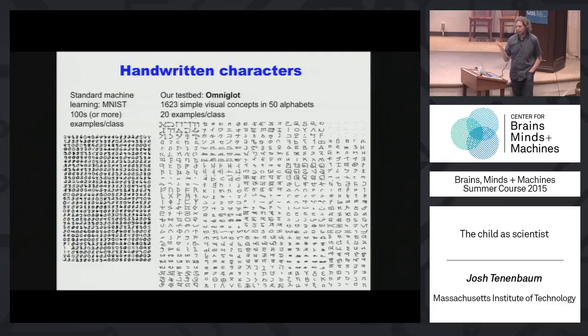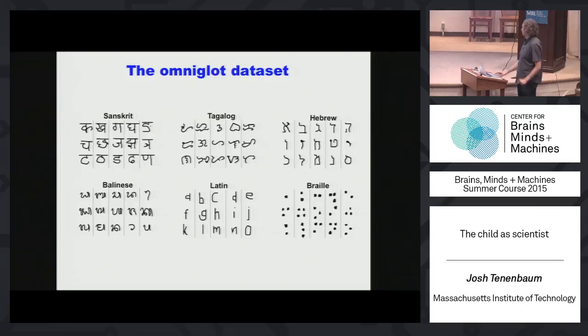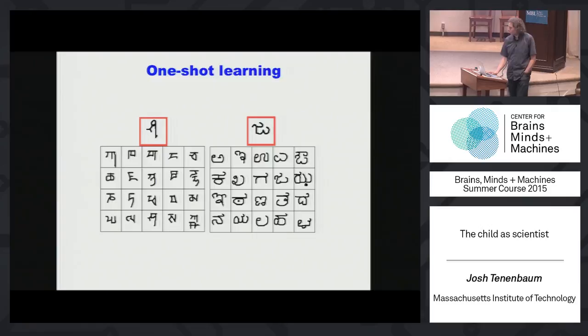So we got people to write by hand characters in 50 different alphabets. The total dataset has 1,623 concepts — handwritten characters you could call simple visual concepts, a warm-up for bigger problems like natural objects. There are 20 examples per class, so roughly 30,000 total data points, very much like MNIST. There are many different alphabets with very different forms — both similarities and differences within and between alphabets, and a kind of hierarchical structure. Some are made-up alphabets. You can do one-shot learning in this domain.